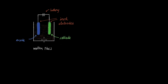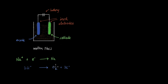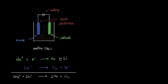We get Na⁺ and Cl⁻ ions. If we write down the reactions that take place at the electrodes: on the cathode side, the Na⁺ ion gains an electron to become sodium metal; and on the anode, two chlorine ions come together to form chlorine gas. To write the cell reaction, we multiply the cathode reaction by 2 and add it to the anode reaction. So we get this as our final cell reaction. When we performed electrolysis of molten NaCl, we got sodium metal and chlorine gas as the products.